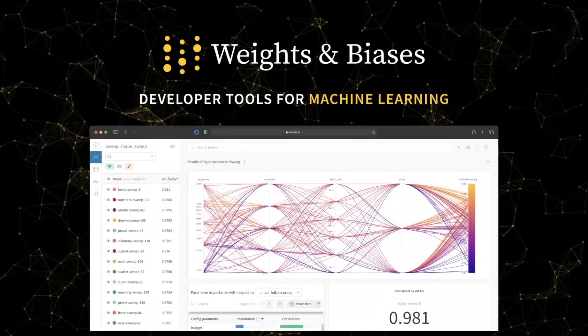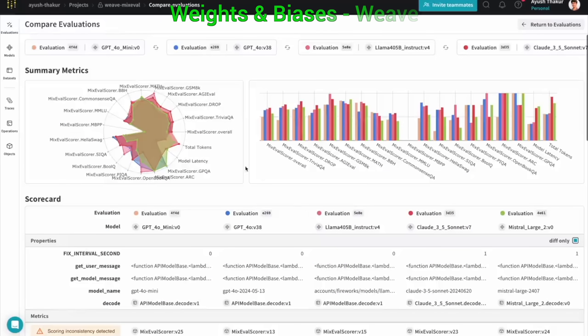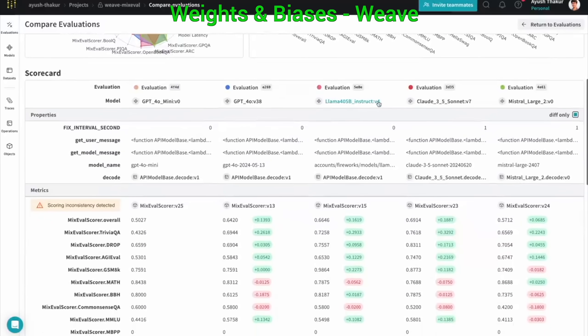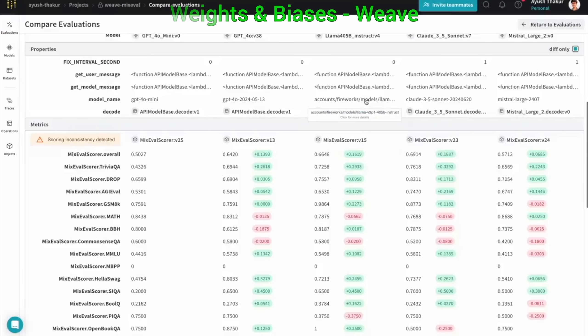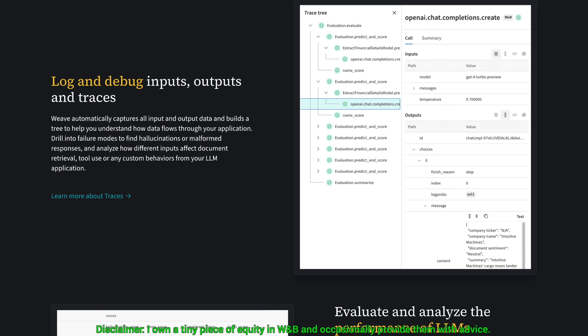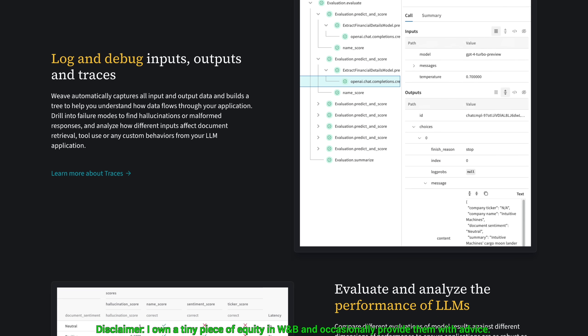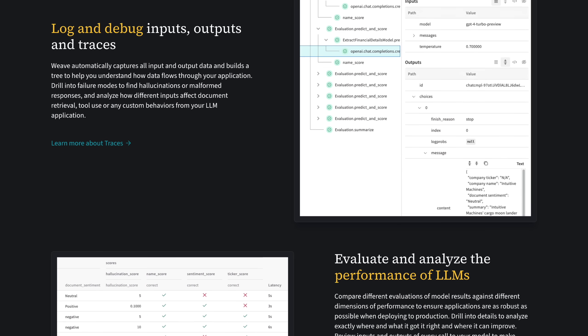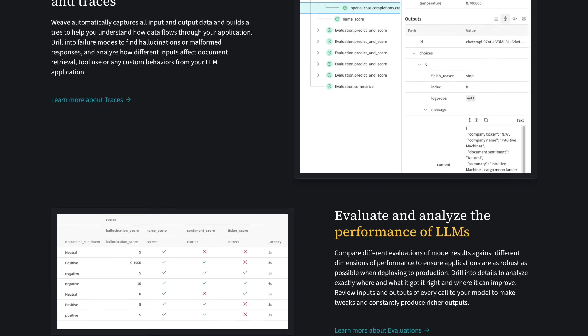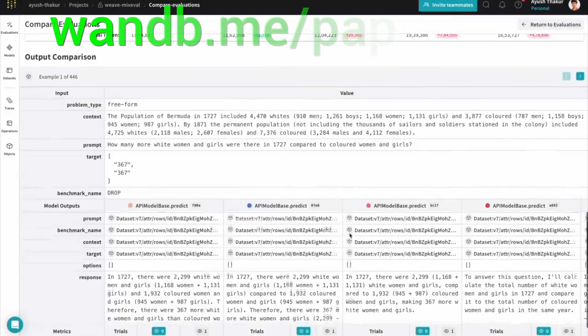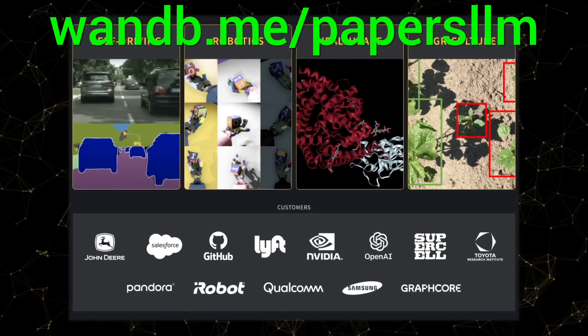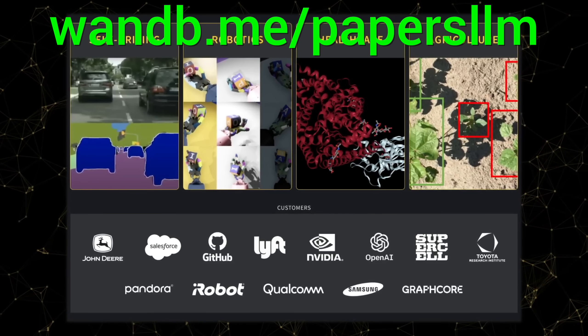We need new tools for the era of LLMs, and Weights and Biases now has Weave, a lightweight toolkit to confidently iterate on LLM applications. Use traces to debug how data flows through each step of your app, and use evaluations to measure your progress. It is the best! Try it out now at wnb.me/papersllm or click the link in the description below!